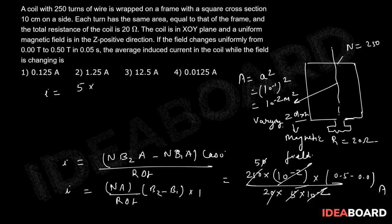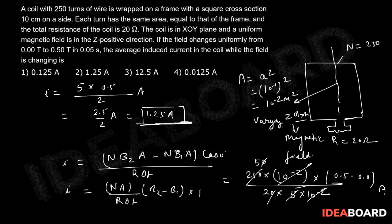to 5 times 0.5 divided by 2, this much ampere, so this will be 2.5 by 2 ampere, so that would be 1.25 ampere. So 1.25 ampere current will be there. Which option is the right option? Option number 2 is the right choice.